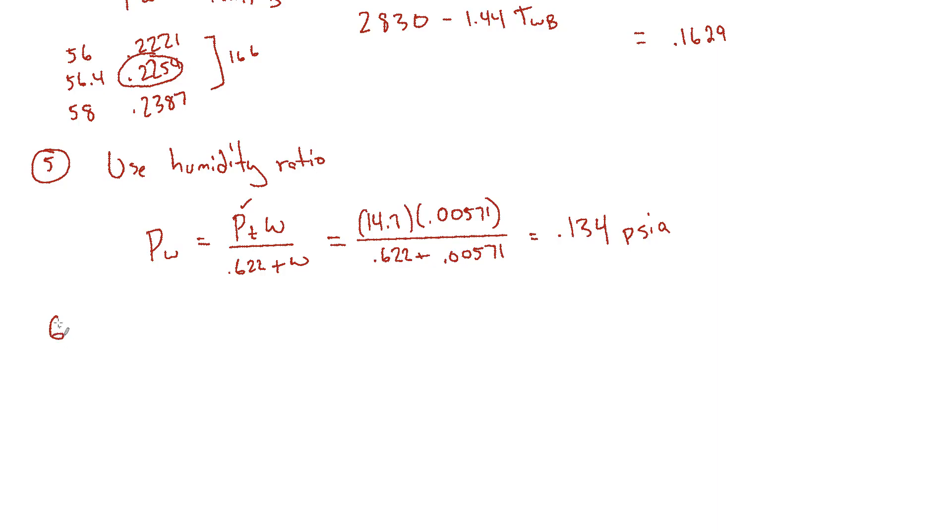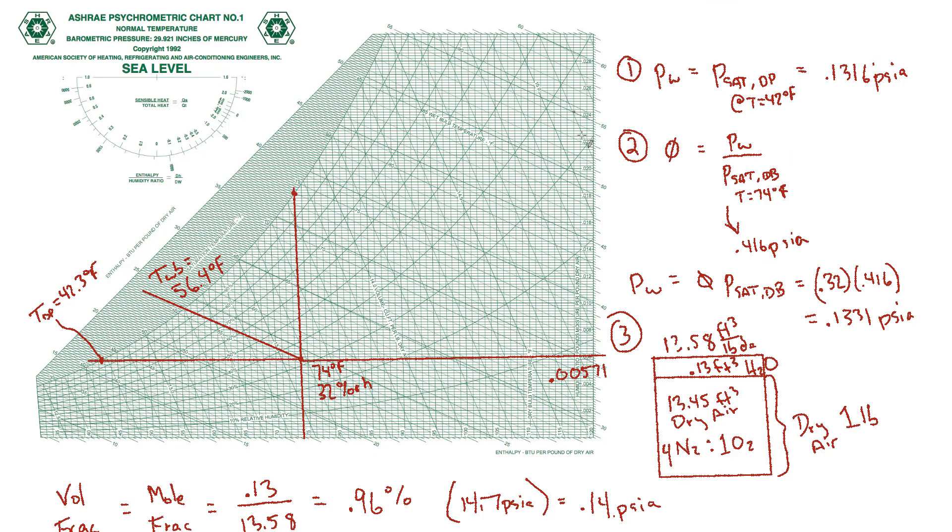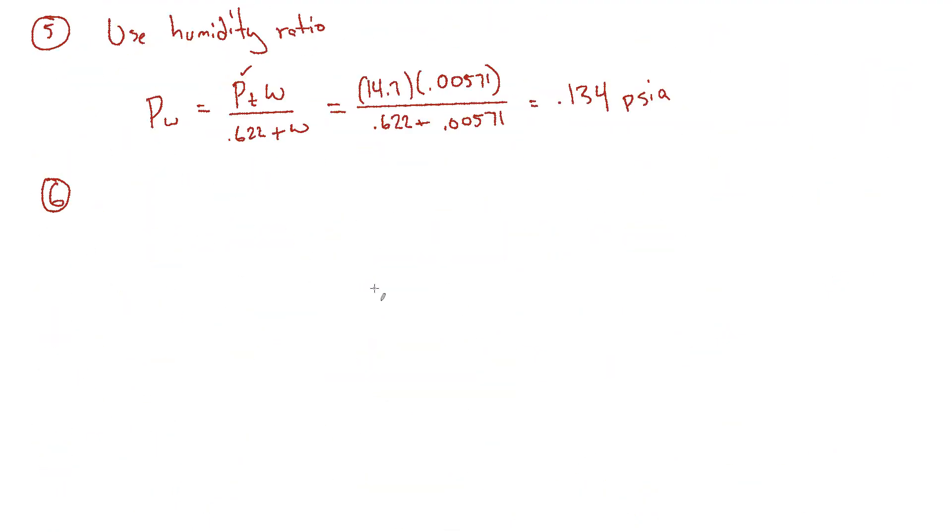And then the sixth method is not so much a method as wouldn't it be nice if the psych chart had a scale on it where you could just read the vapor pressure from the scale. Well, this one doesn't, but some psych charts do. So if you want to look into that, you can find yourself a psych chart that has a vapor scale. And that will save you some time.